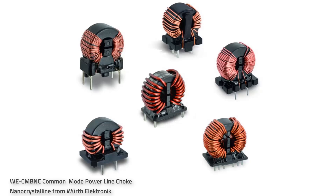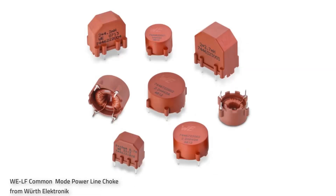High-speed clocks and data lines also generate high-frequency energy, potentially interfering with other circuits. EMI filters are crucial for reducing electromagnetic noise in electronic devices. These filters help ensure devices meet electromagnetic compatibility (EMC) standards and operate smoothly by blocking unwanted frequencies while allowing desired signals to pass through.